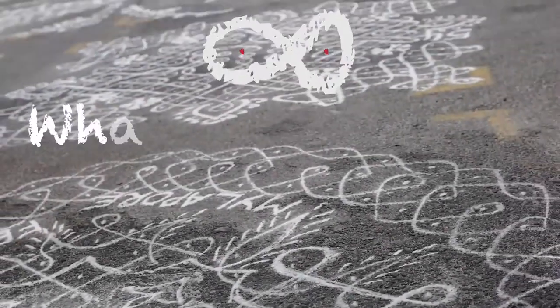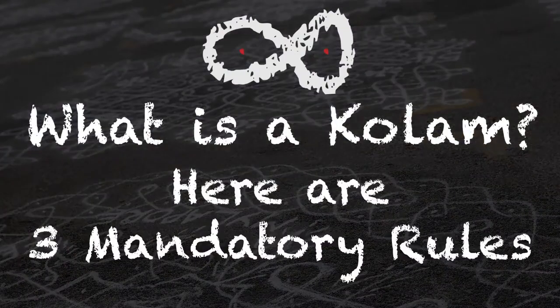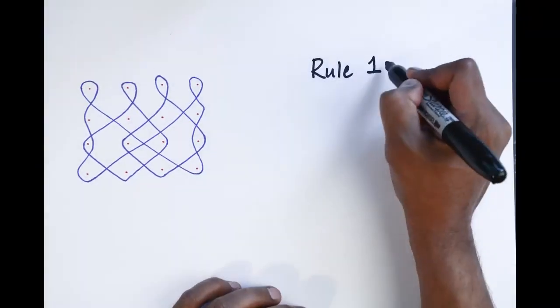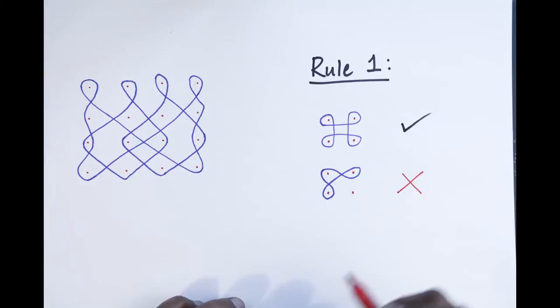Okay, what is a kolam? Here are three mandatory rules that every kolam must obey. Rule one, a line should loop around all the dots, leaving no dots unlooped.